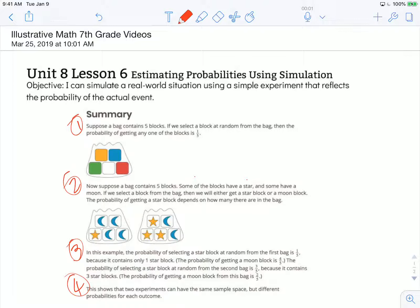In paragraph one it says, suppose a bag contains five blocks. If we select a block at random from the bag, then the probability of getting any one of the blocks is one out of five. Because there's five different colors of these blocks, there's five different blocks in the bag. We could pull out any one of those out of the five that are in the bag.